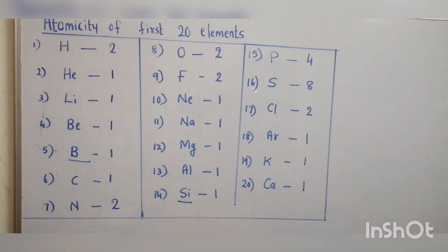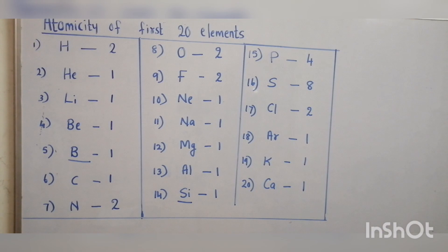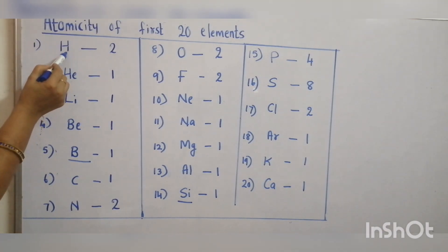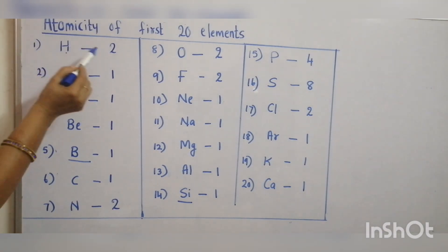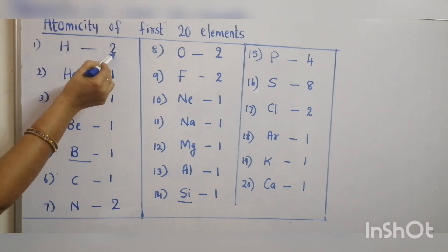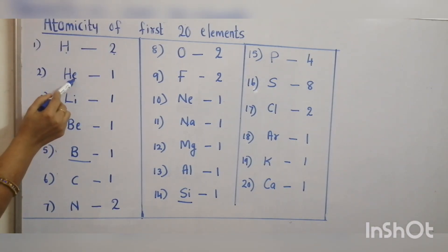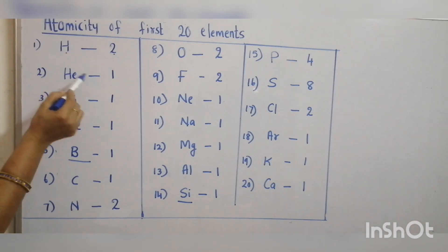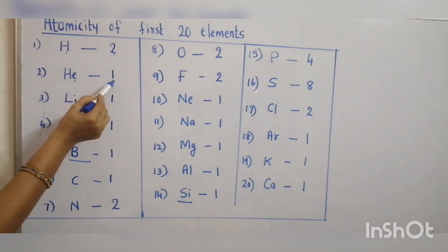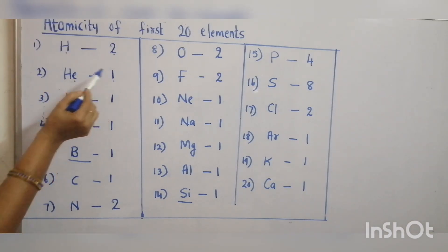Let's move on to the atomicity of the first 20 elements of the periodic table. Hydrogen is a diatomic gas; atomicity is two. Helium is an inert gas; atomicity one.